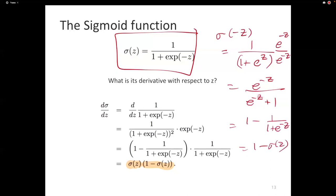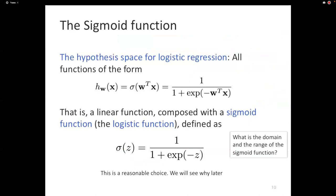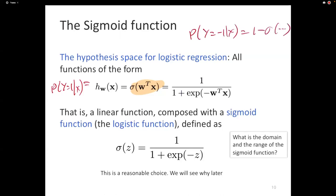So sigmoid(−z) = 1 − sigmoid(z). Note also that in our model, the probability of y equals 1 given x is the sigmoid, and the probability of y equals −1 given x is 1 minus the sigmoid. So probability of y = −1 given x is 1 − sigmoid(w^T x).